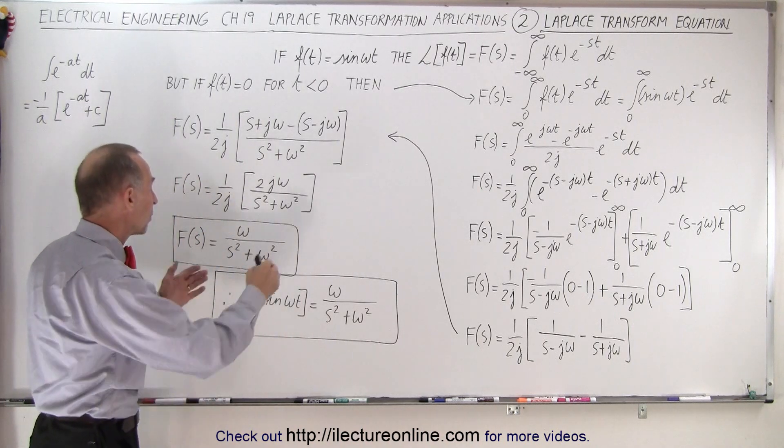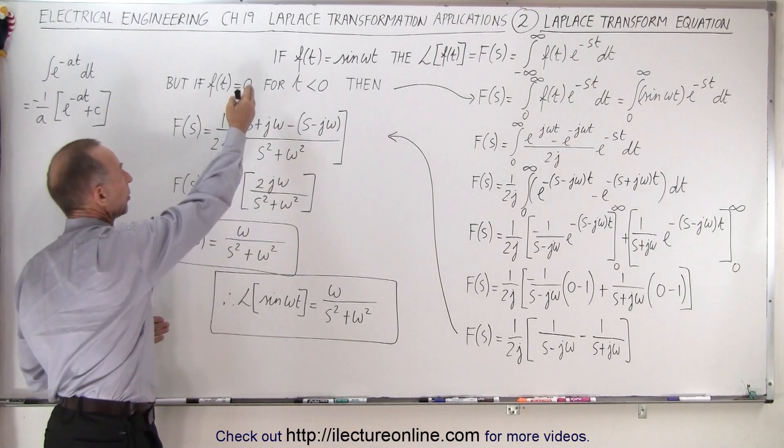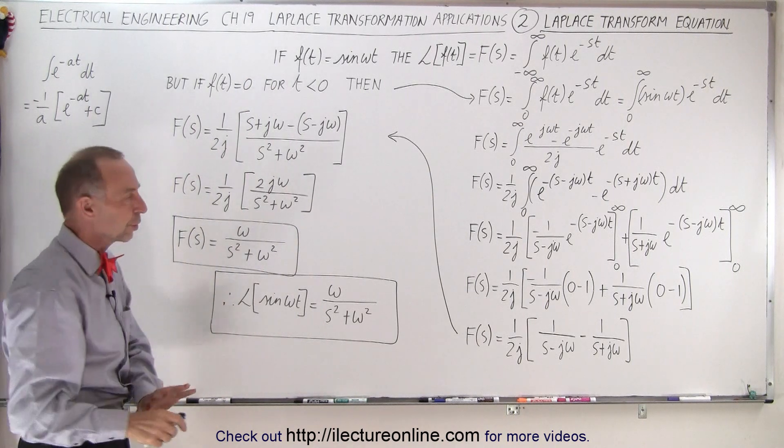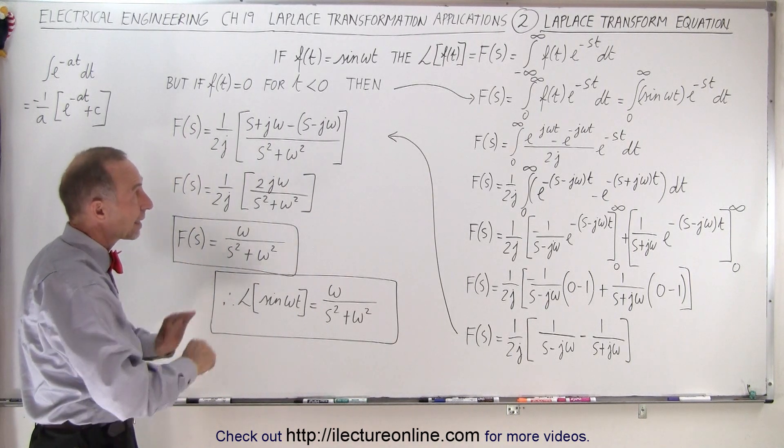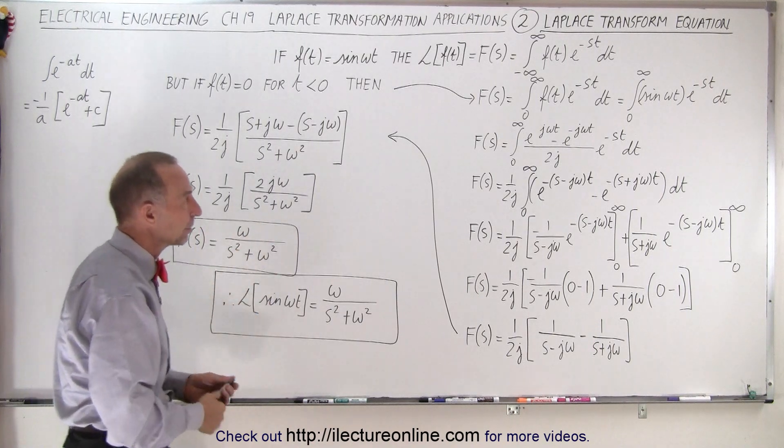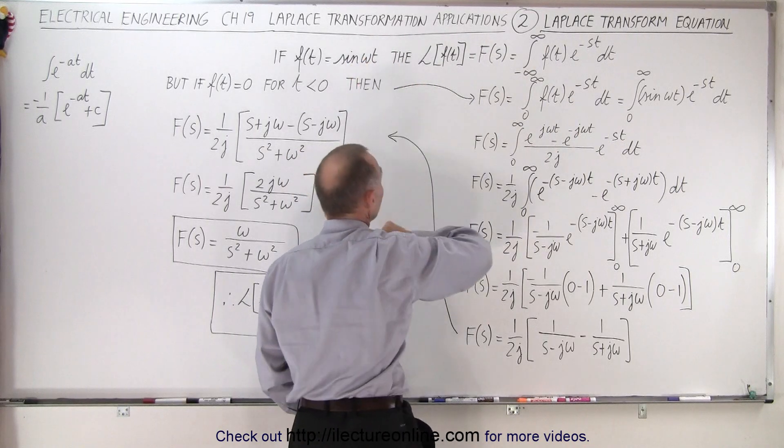Then of course we would then transform the solution back to the original time domain function and then we'll get the final solution. But we'll show you examples of how to do that. Here we simply wanted to get an example of a mathematical method to find the Fourier transform of a typical function like the sine of omega t.